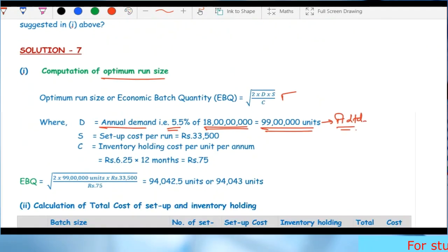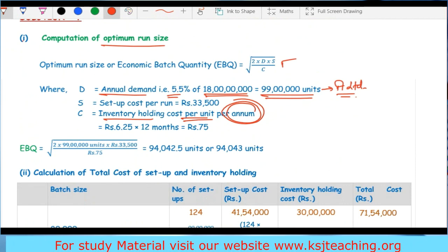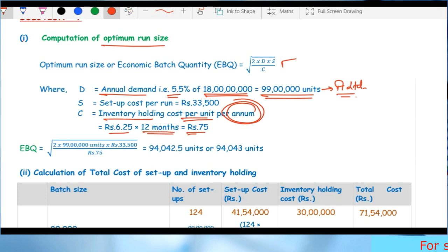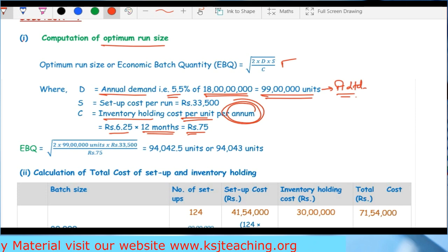Setup cost is Rs 33,500, and inventory holding cost per unit per annum is Rs 6.25 multiplied by 12 months equals Rs 75. This is very important - read the question carefully. This is an area where I guarantee 99% of students will make a mistake because we don't read questions carefully.